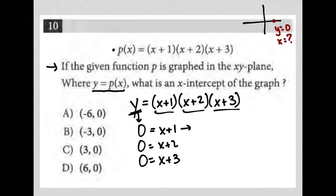So how do I solve for this? So for the first one, I would subtract 1 from both sides, giving me x equals negative 1, and therefore giving me an x-intercept of negative 1, comma 0.